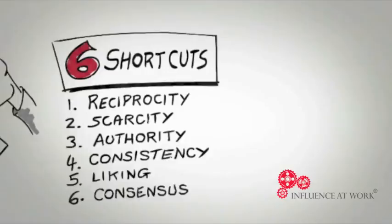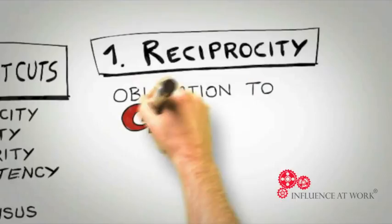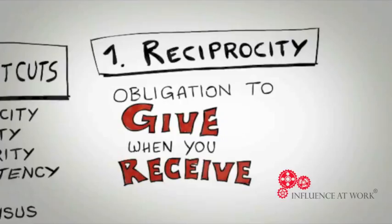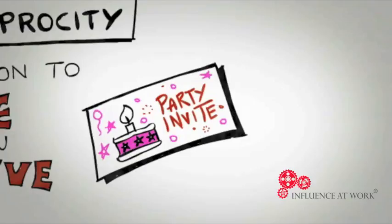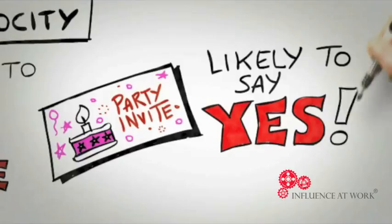The first universal principle of influence is reciprocity. Simply put, people are obliged to give back to others the form of behavior, gift, or service that they have received first. If a friend invites you to their party, there's an obligation for you to invite them to a future party. If a colleague does you a favor, then you owe that colleague a favor. In the context of a social obligation, people are more likely to say yes to those that they owe.